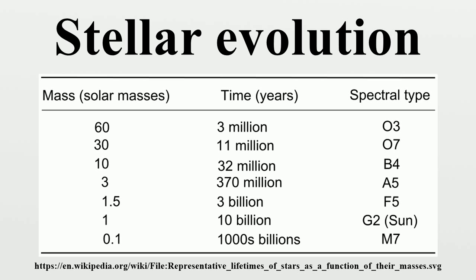All stars are born from collapsing clouds of gas and dust, often called nebulae or molecular clouds. Over the course of millions of years, these protostars settle down into a state of equilibrium, becoming what is known as a main-sequence star.